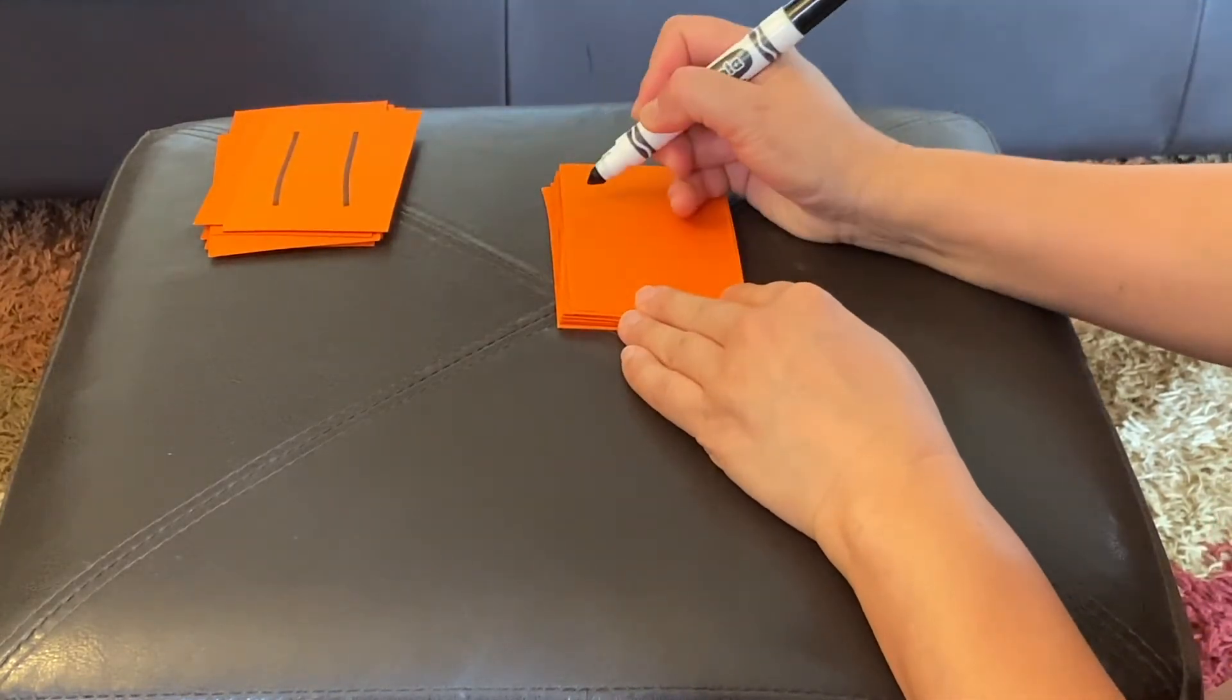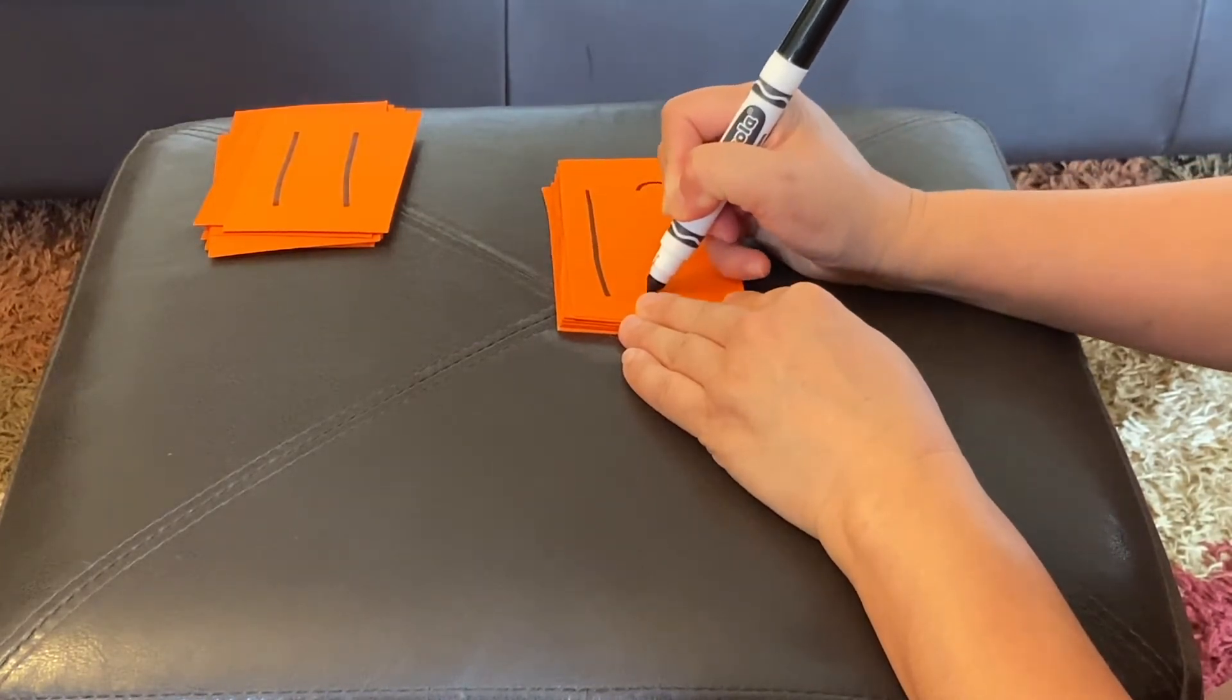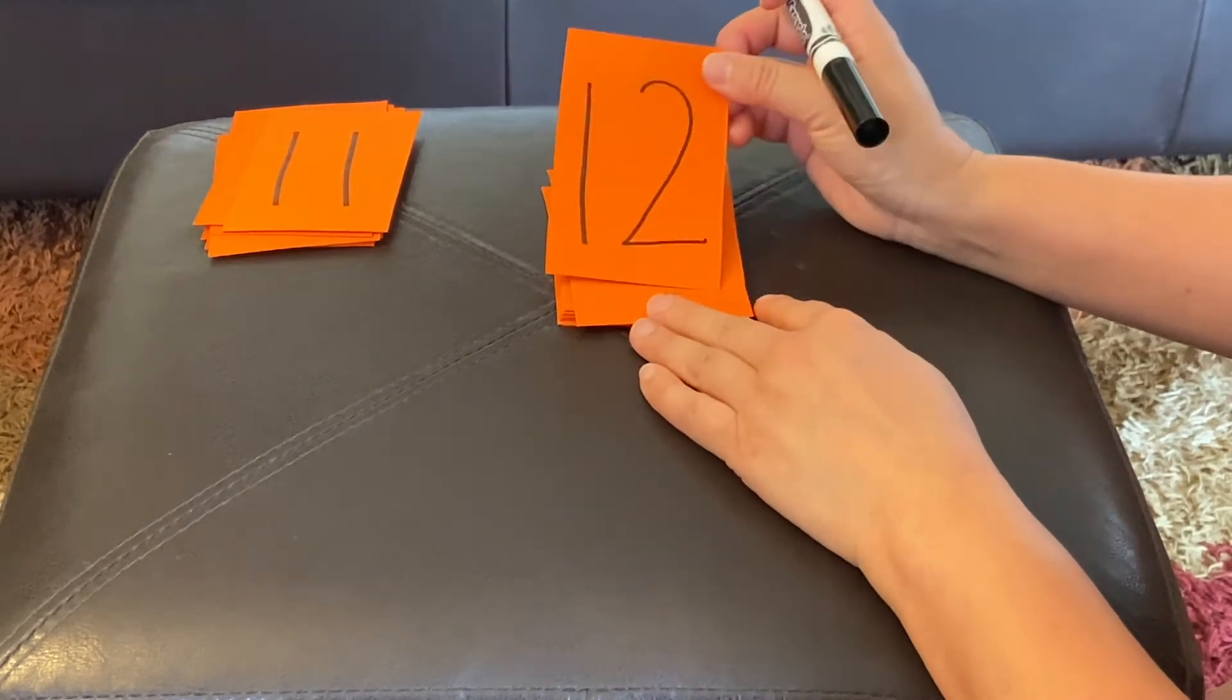Twelve. A one, and a two, like a heart, half of a heart, and a horizontal line across.